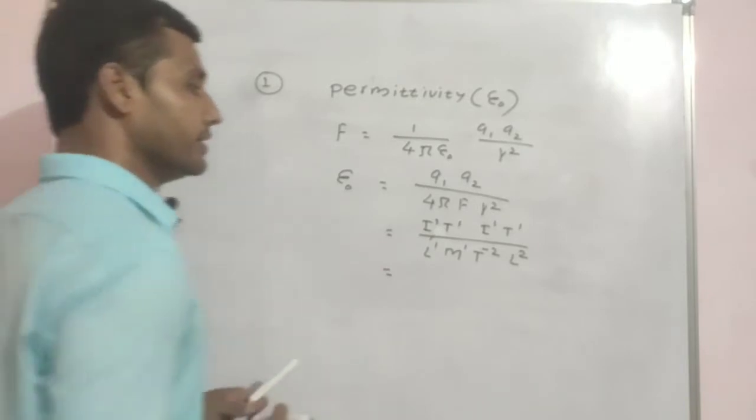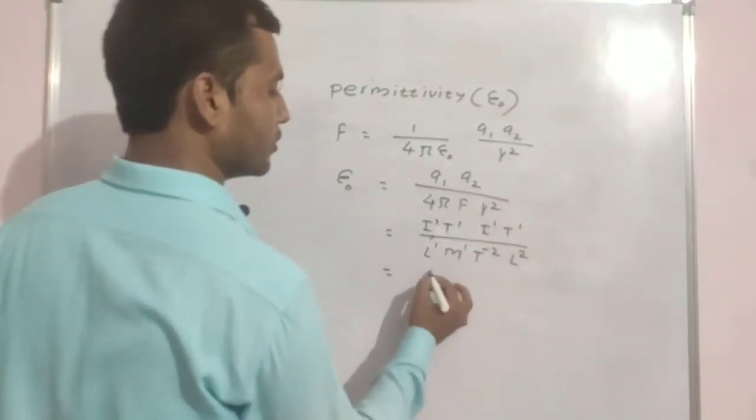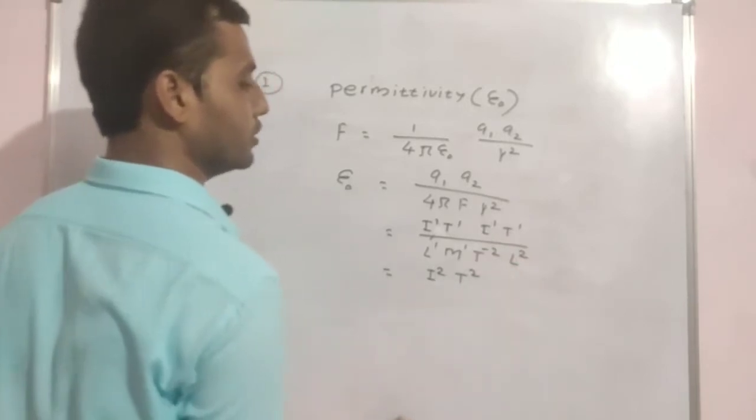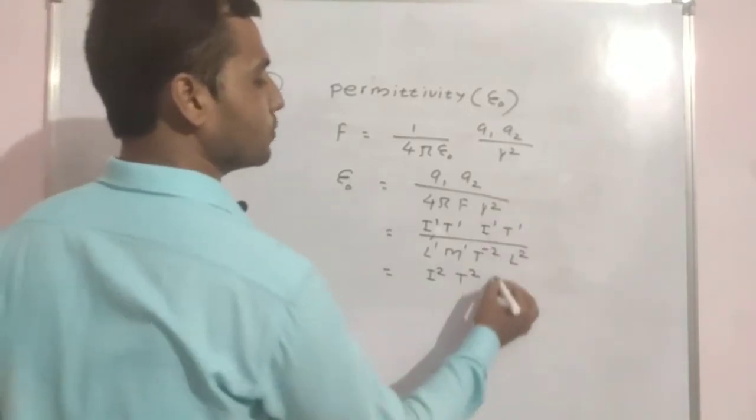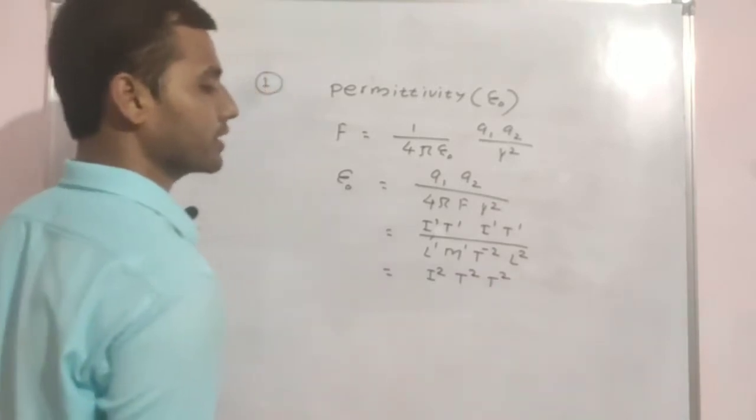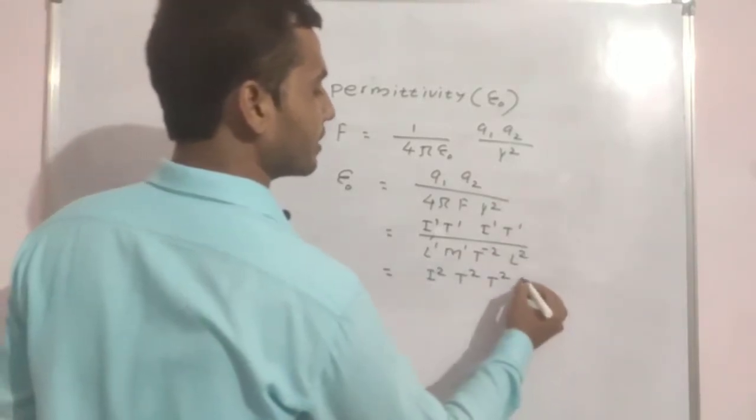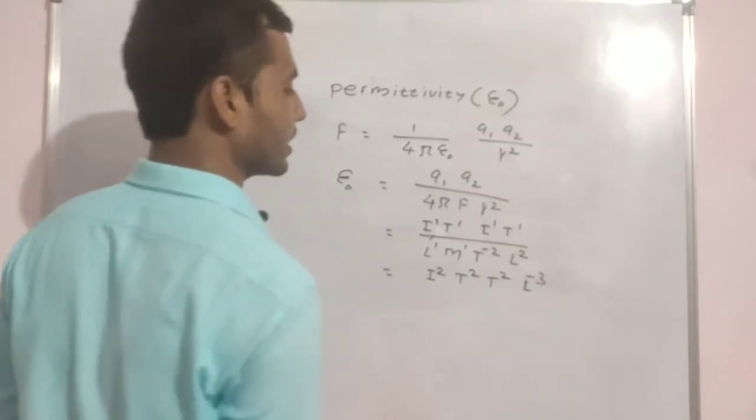So now, i1, i1 becomes i2. t1, t1 becomes t2. This minus t2 when going up becomes plus t2. This 1 plus 2 becomes 3, and going up becomes l minus 3.